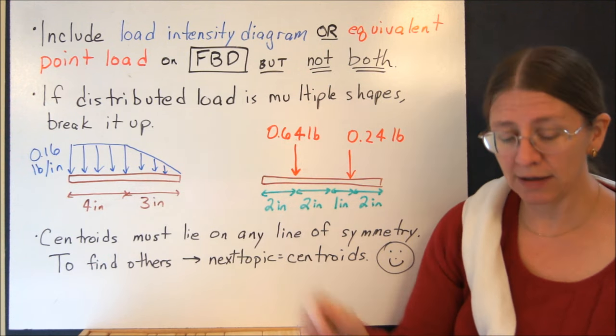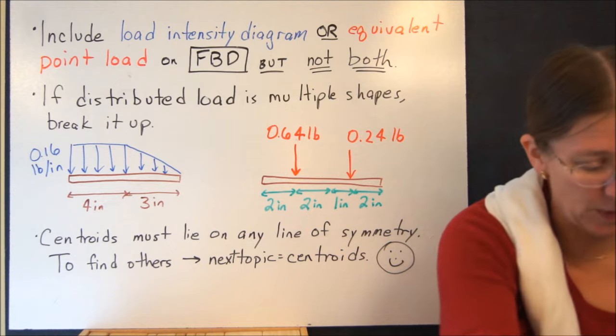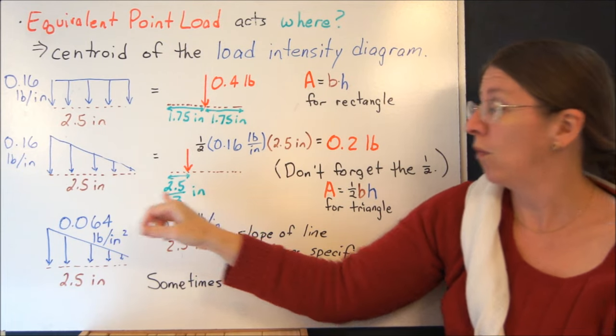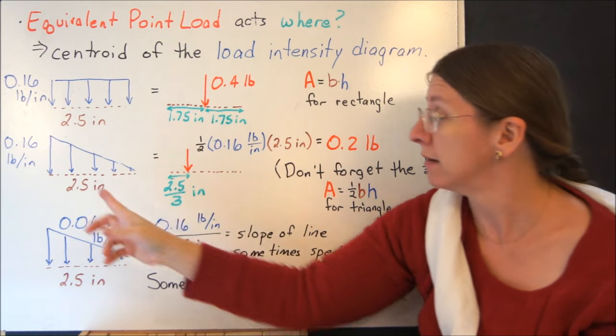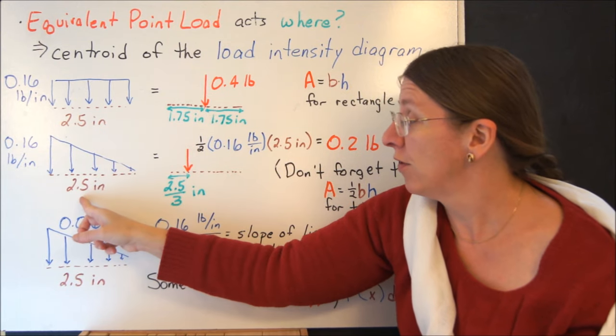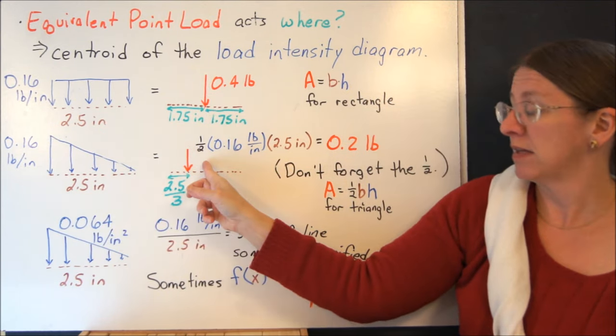So the centroid of a rectangle is in the middle, and that would act here. The centroid of a triangle, and I didn't actually say that, so let me put this back up again for a minute. The centroid for a triangle is a third of the way from, I say, a third of the way from the big end. So if you have a right triangle like this, a third of the way of 2.5 tells me where this acts.